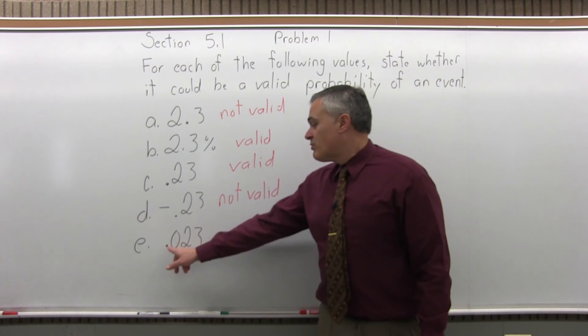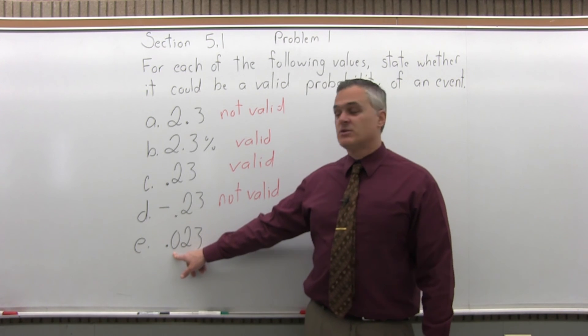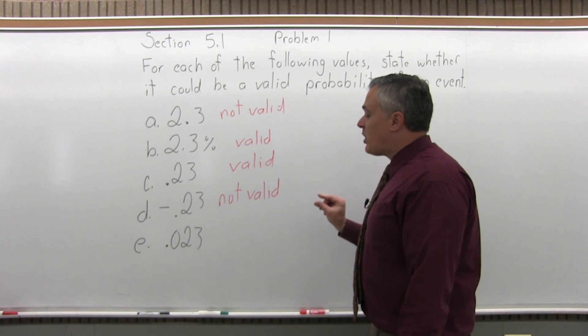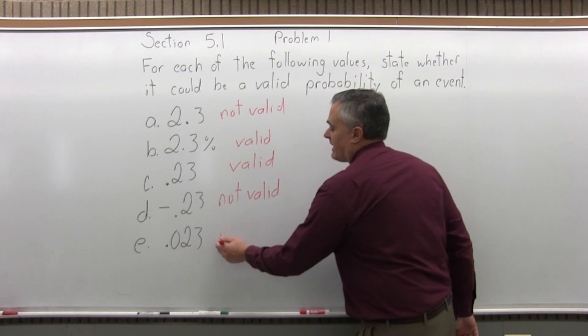And the last one, .023, that's okay, that's between 0 and 1. That's a very small probability, but it is certainly a valid probability.